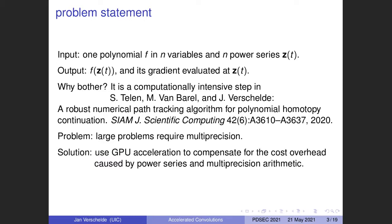Here is our problem. Specifically, we are given one polynomial in several variables. For every variable, there is a power series. The output consists of the value of that polynomial and its gradient evaluated at all the power series. We want to do this because computing power series will tell us the nearest location of the closest singularity in a polynomial homotopy defined by one parameter. In general, this is a computationally intensive step in a new robust path tracking algorithm.